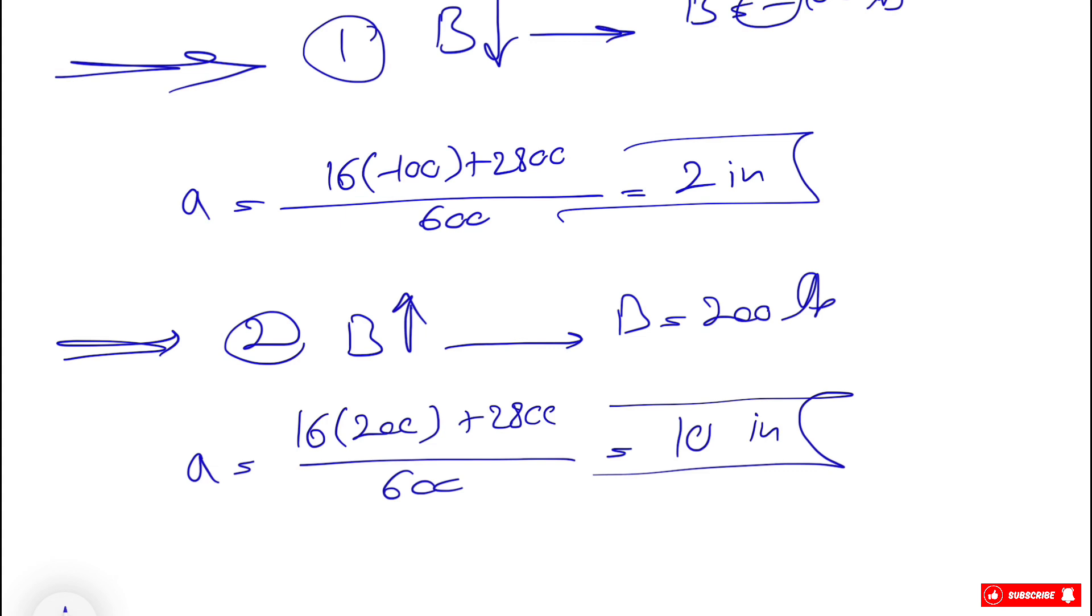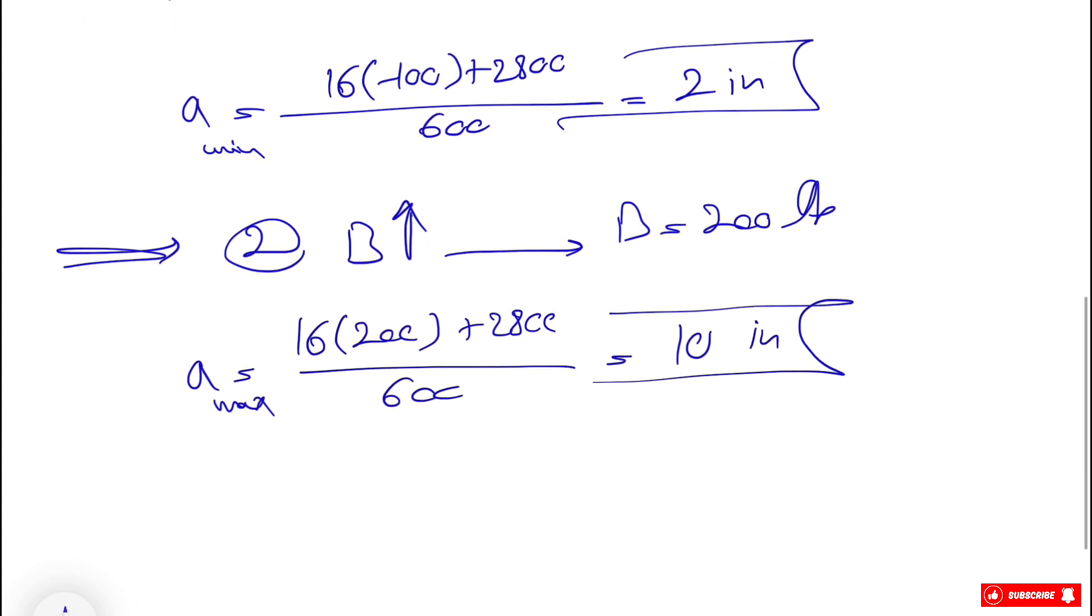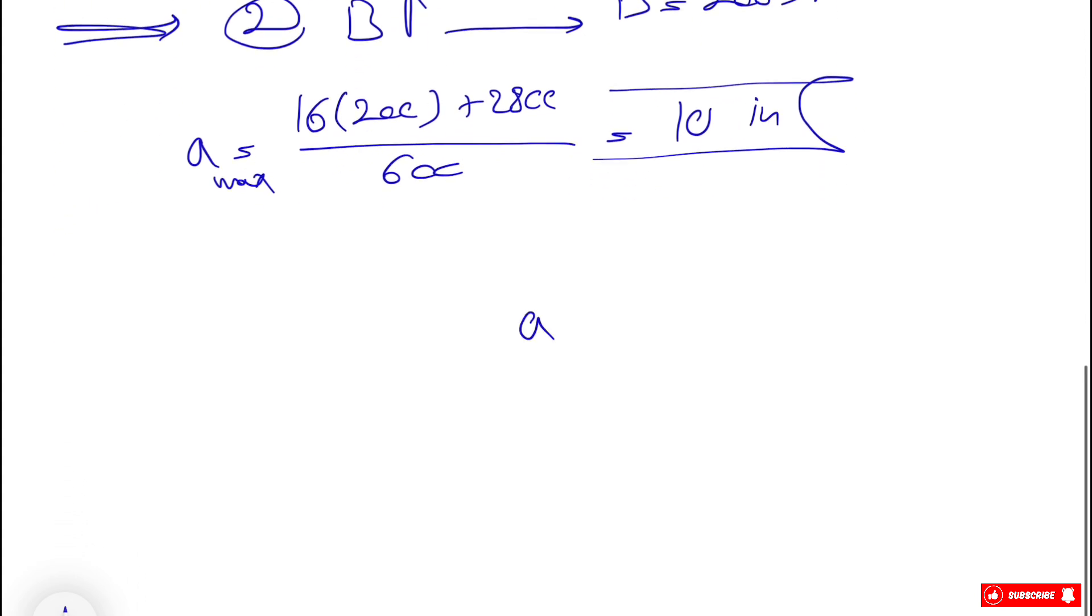So we found the minimum for a and the maximum for a in order to have those 100 and 200 pounds forces at B. So that would be our final answer. The minimum for a will be two inches and the maximum will be 10 inches.